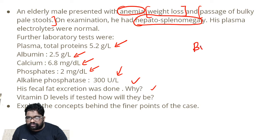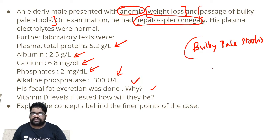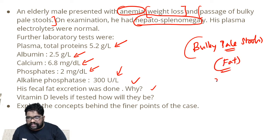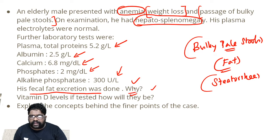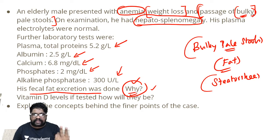When there is a passage of bulky and yet pale stools, it means the color of the stools — which is golden yellow to brown — has been altered. The pale color can be because of fat, so that would mean the patient can have steatorrhea. His fecal fat excretion was done because there might be fat passing through the stools, making the stools bulky and pale.